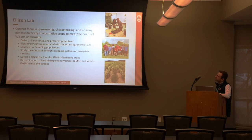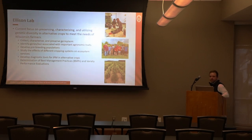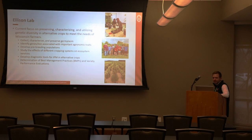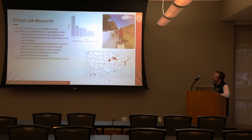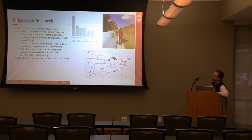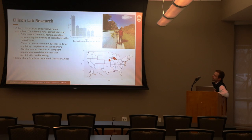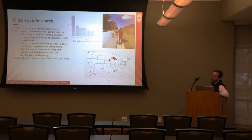At the University of Wisconsin Ellison Lab, the current focus is preserving, characterizing, and utilizing genetic diversity in alternative crops to meet the needs of Wisconsin and regional farmers. Dr. Adamola Aina, a postdoc in the lab, has been collecting feral hemp across the Midwest to evaluate it for fiber qualities and map traits for improving breeding populations toward potential commercial cultivars. Collections have been made from locations all over the Midwest, with plants to be evaluated in the greenhouse and field to improve the Midwest breeding program.